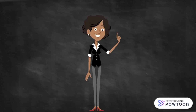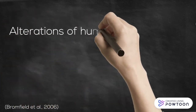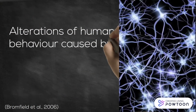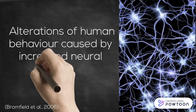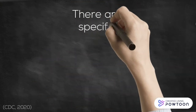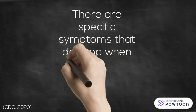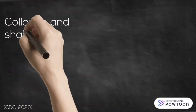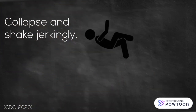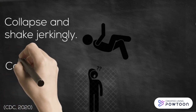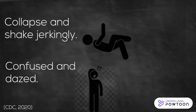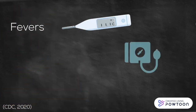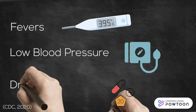Let's introduce what a seizure is first. In general, seizures are understood to be alterations of human behavior caused by increased neural activity in the brain. There are specific symptoms that develop when someone is experiencing a seizure. People who have experienced a seizure tend to collapse and shake jerkingly. In some cases, seizure victims will also feel confused and dazed. Seizures can occur for many reasons, which include fevers, low blood pressure, or drug withdrawals.